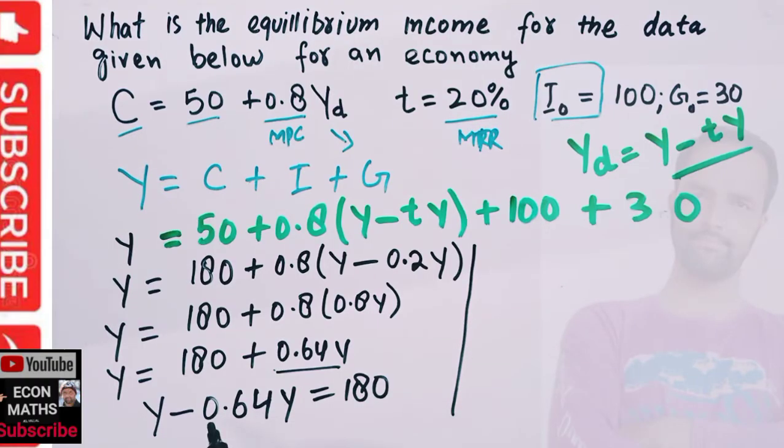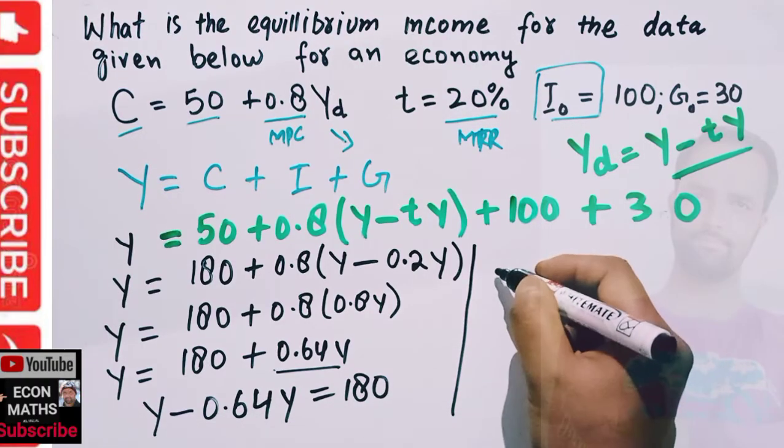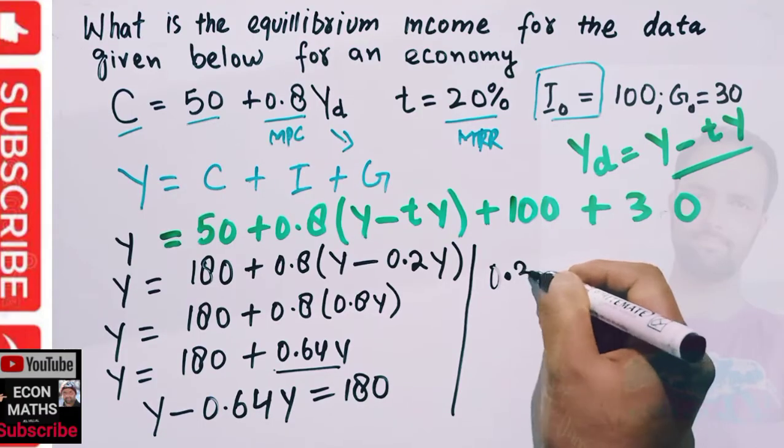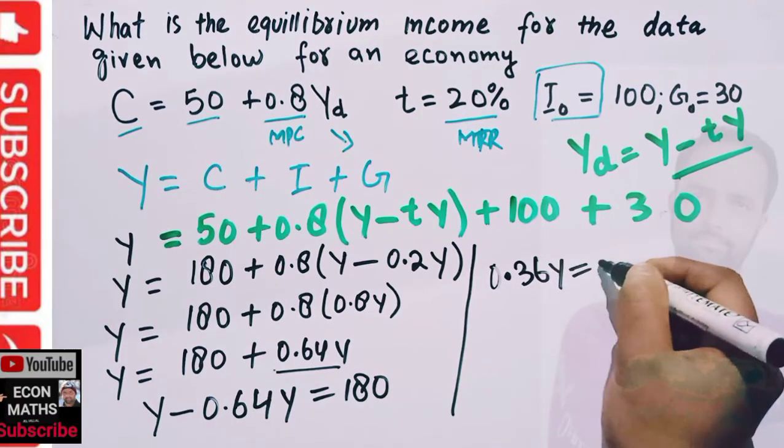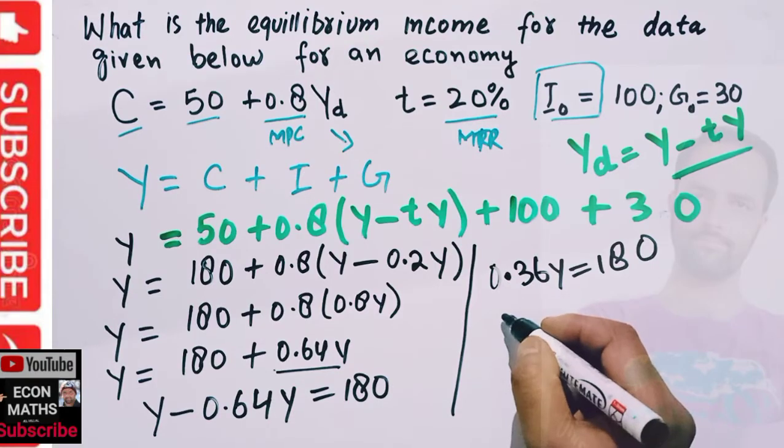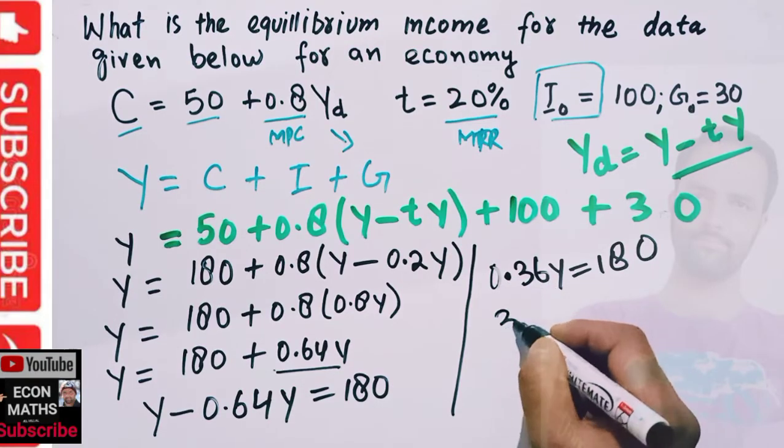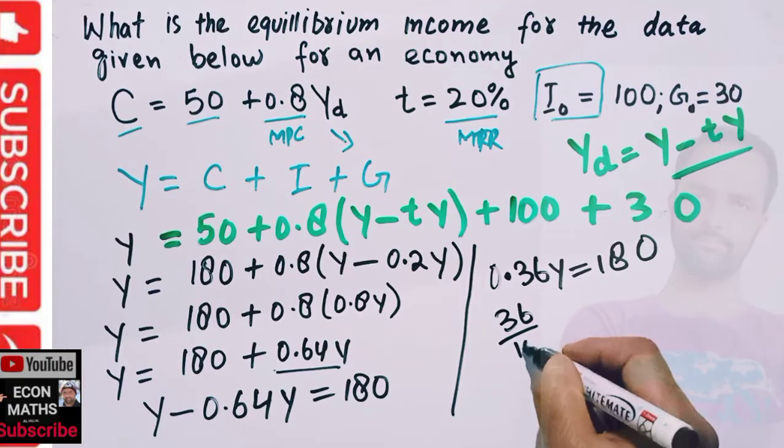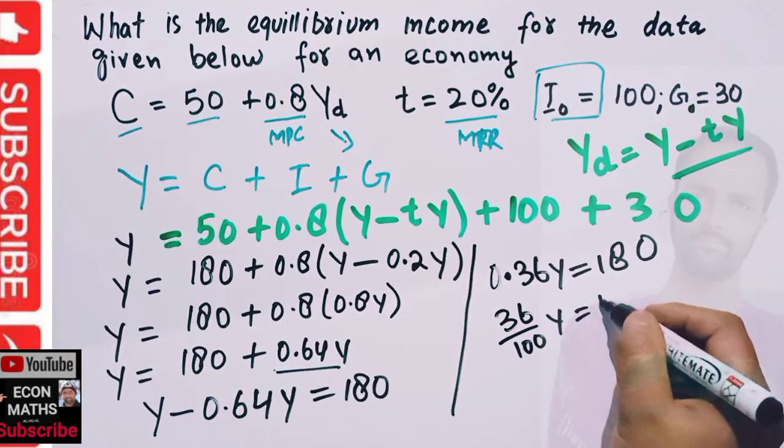If we subtract 0.64Y from Y, we are left with 0.36Y = 180. 0.36 can be written as 36/100, so we have (36/100)Y = 180.